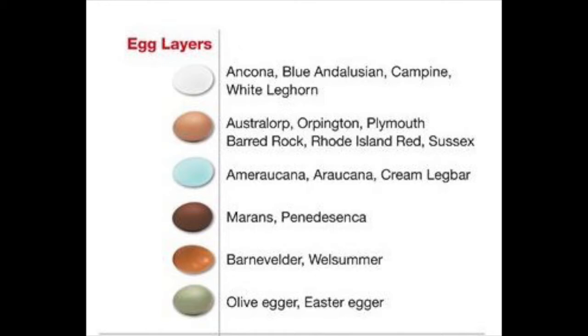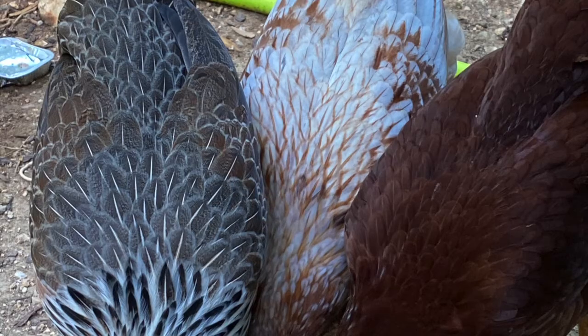Different breeds of hens lay different colored eggs. There's a lot of variety in the color, ranging from white, brown, blue, green, dark brown, and even pink.